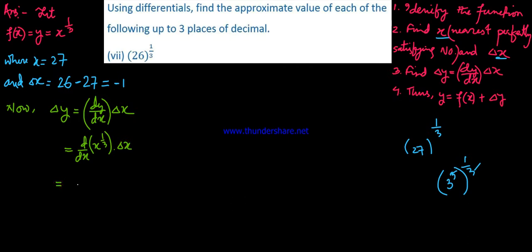dy by dx of y, where the function y equals x to the power 1 by 3. Using differentiation, the power 1 by 3 comes down, and we get 1 by 3 times x to the power one less, which is 1 by 3 minus 1 equals minus 2 by 3.